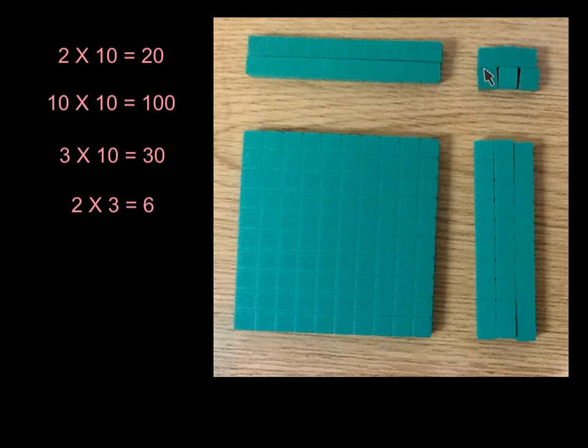And finally, we're going to take this little rectangle, which is a 2 by 3 rectangle. 2 times 3 equals 6. So now we have four partial products: 20, 100, 30, and 6.